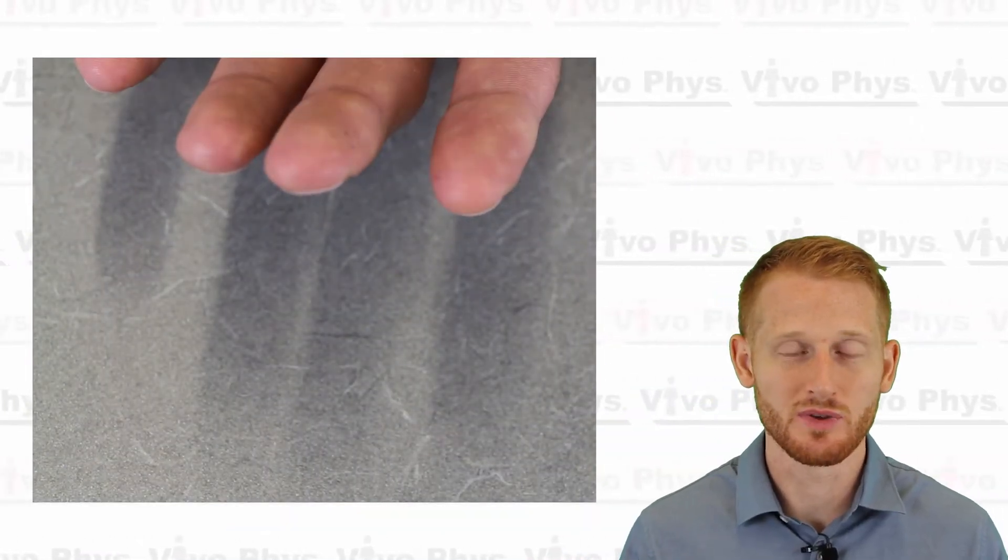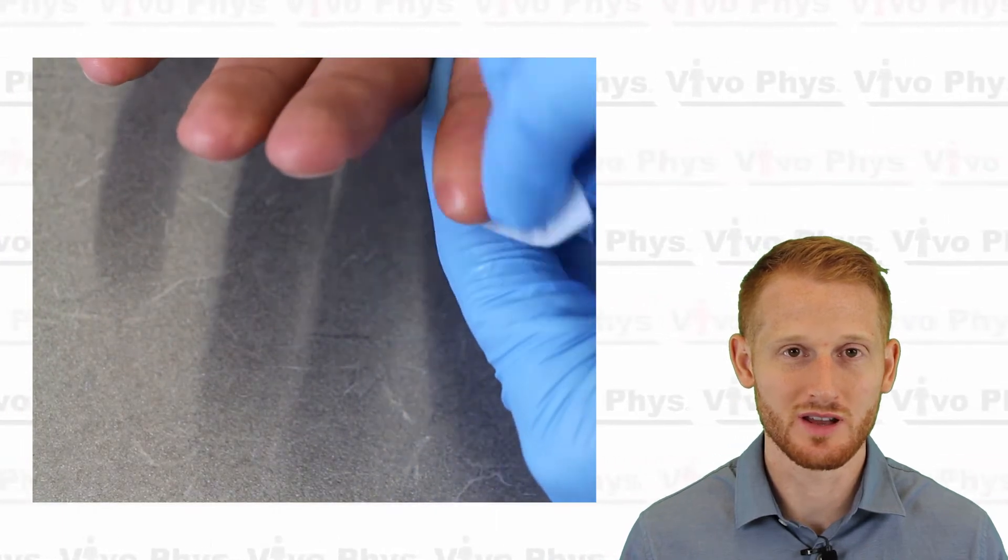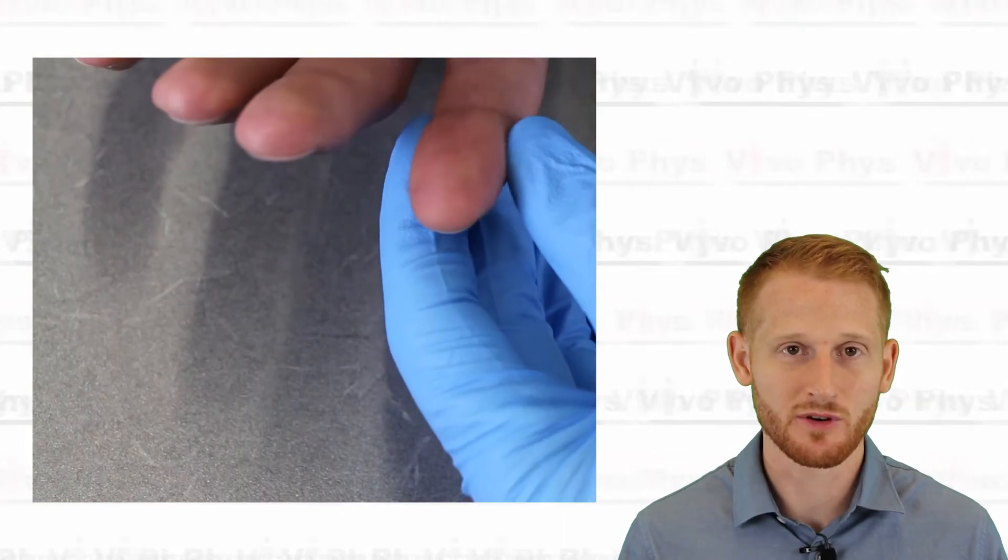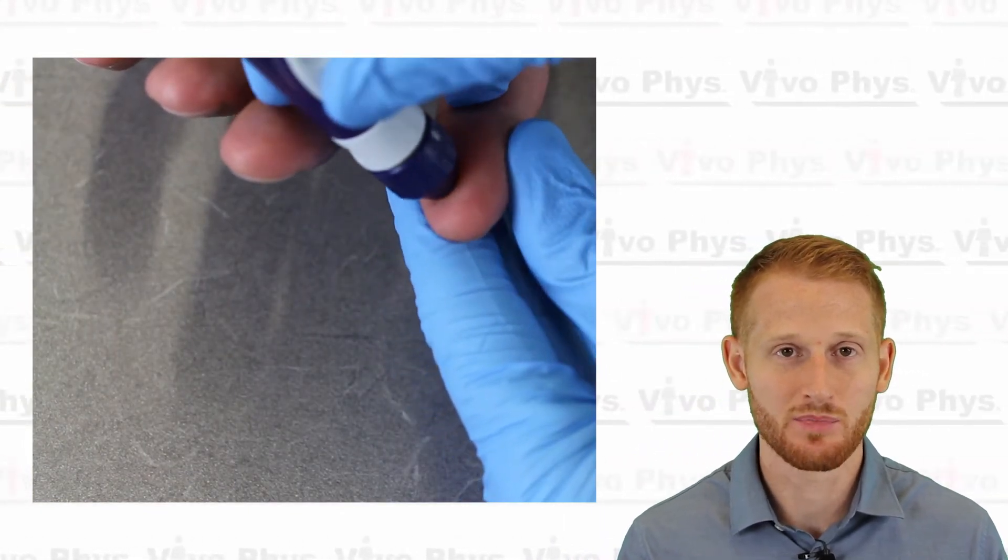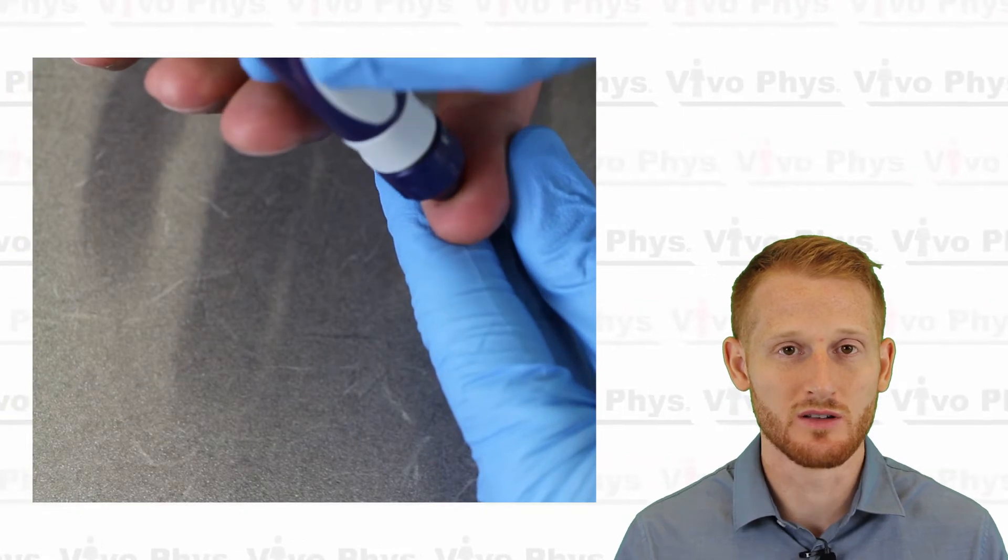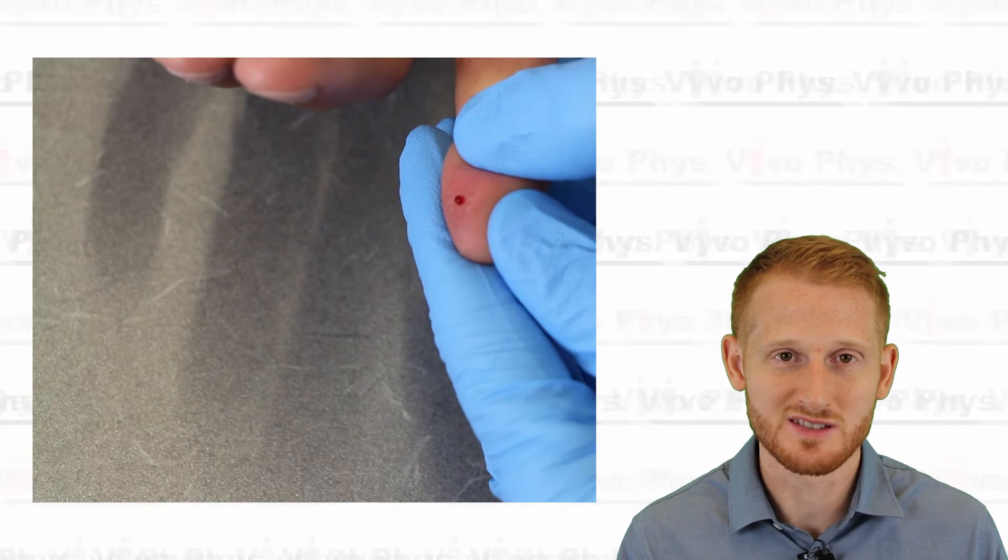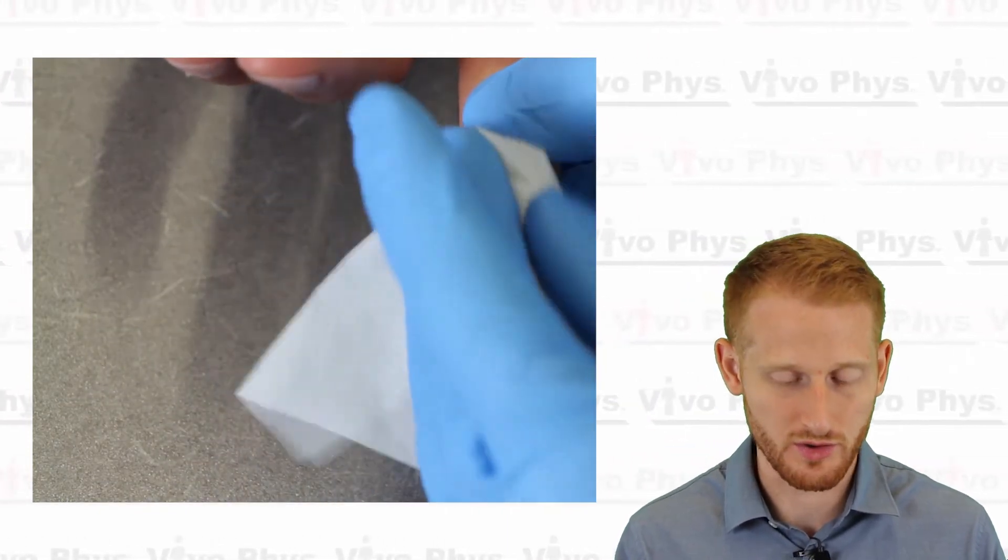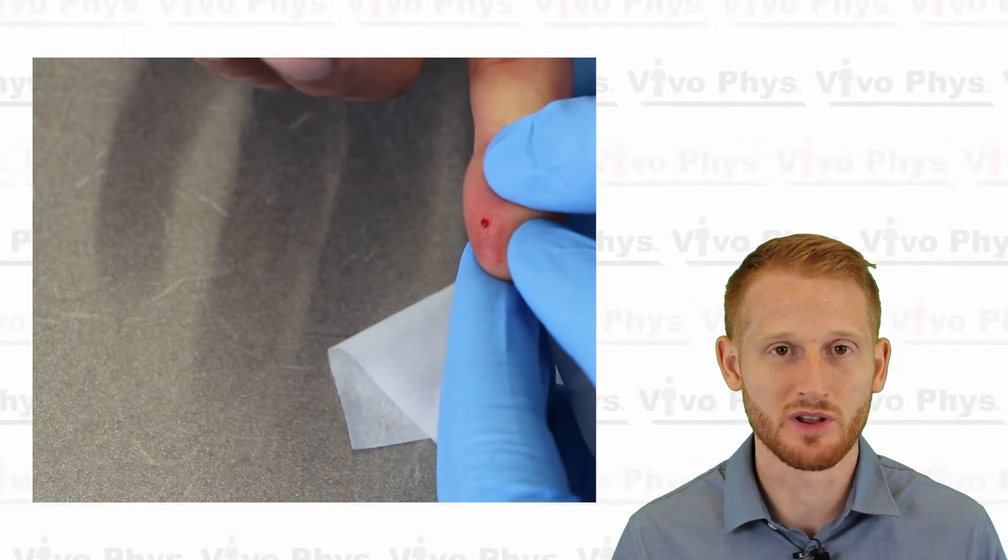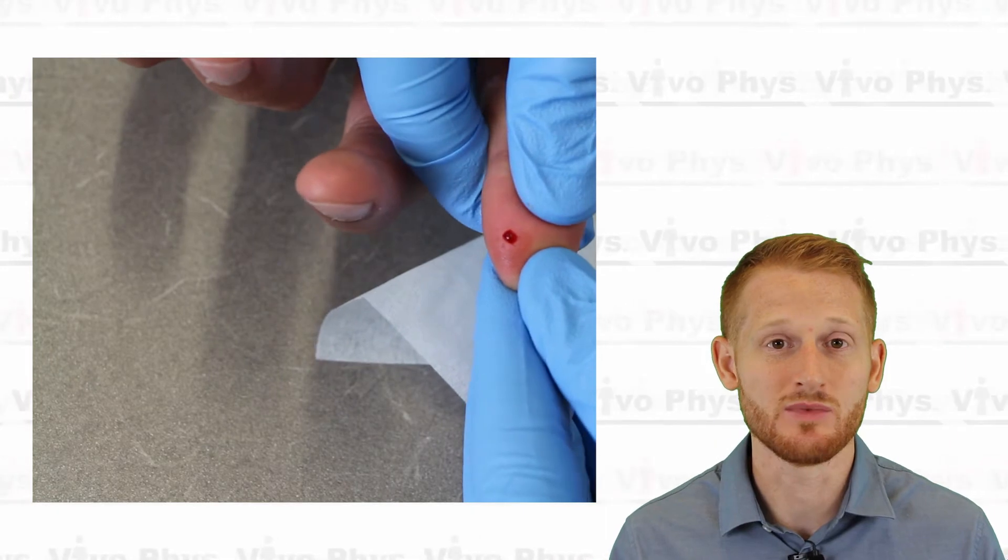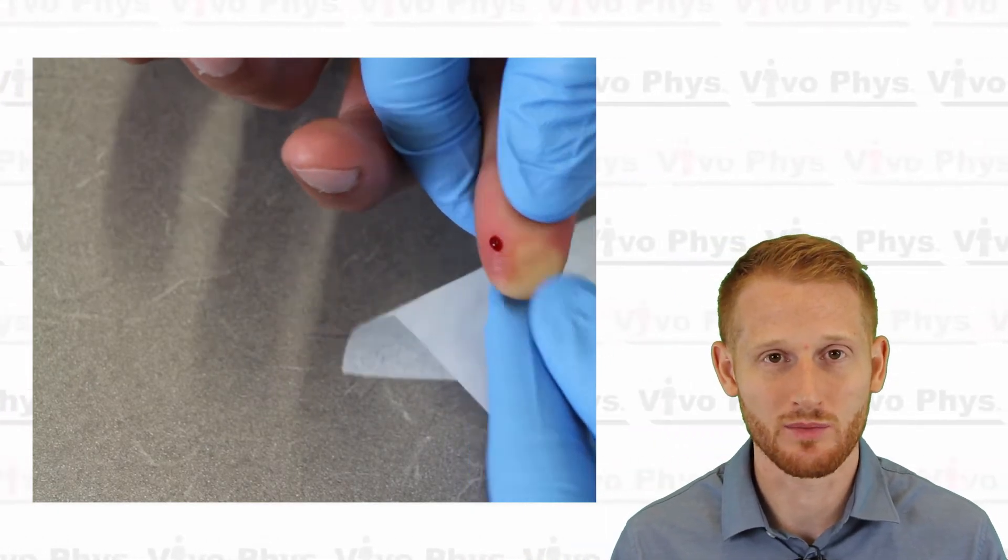So once the lancet gun is ready to use we're simply going to take the finger. We're going to clean it with a little bit of alcohol so we can make sure that it's going to be as sanitary as possible for the person. Allow that alcohol to dry and then firmly press the lancet gun onto the finger and push the trigger button to allow the lancet to go into the skin and pierce the skin slightly. Think of it like a tube of toothpaste. Squeeze a little bit of blood out of the hole that you created and then wipe that first drop of blood away with some sort of absorbent tissue. Something that's going to keep the area clean like a kim wipe or a piece of gauze.